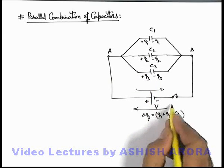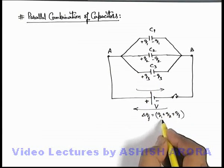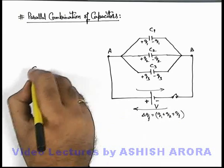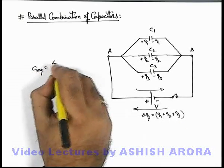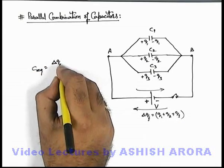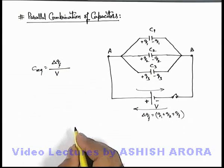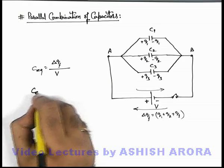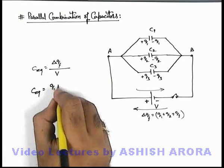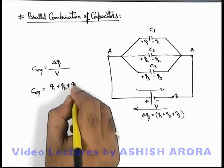Now in this situation the total amount of charge which has been flown through the battery is this. So here C equivalent we can write, which we already studied, that the total amount of charge flown through the battery divided by the battery potential difference. So here C equivalent can be written as q1 plus q2 plus q3 by V.